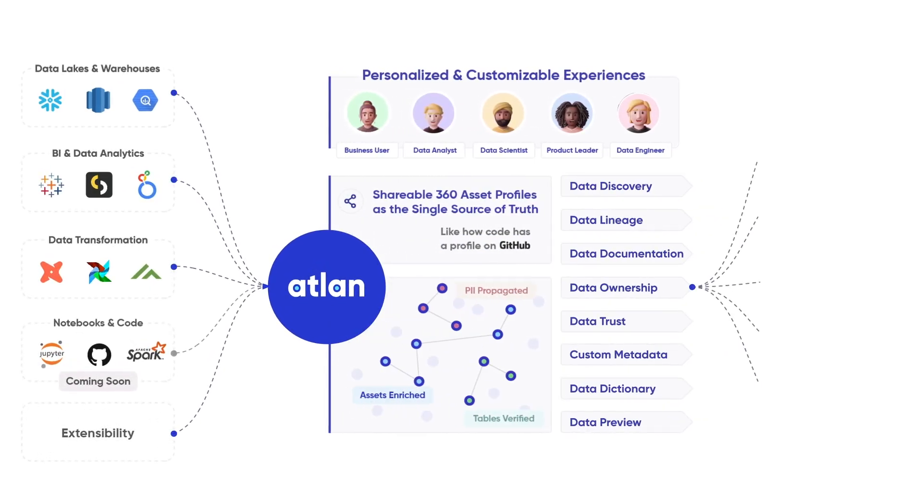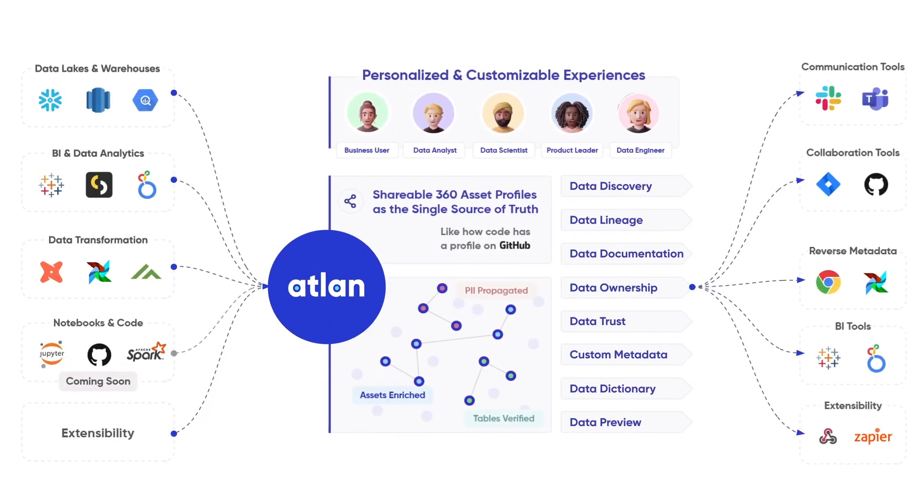Simply put, a data catalog is a tool that brings together metadata from a diverse set of data assets — from cloud data warehouses or your data lake to BI dashboards — creating an end-to-end searchable map of your data estate. A data catalog helps your users search, discover, understand, and trust your data, whether you're looking for tables, views, columns, tags, data pipeline logs, or even queries. It acts as a single source of truth for all your data assets.